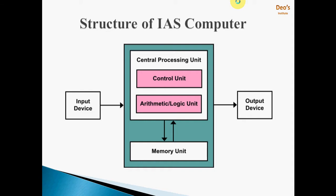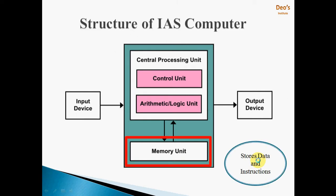Now we will see the structure of the IAS computer. It contains a central processing unit, memory unit, input device, and output device. This is the basic architecture which applies to any processor or computer in today's era as well. This is the memory unit, responsible for storing data and instructions. In von Neumann architecture, a single memory unit is used to store both data and instructions, but in Harvard architecture, separate memory units are used for data and instructions. This is the only difference between von Neumann and Harvard architecture.